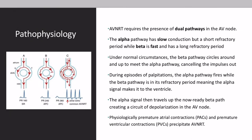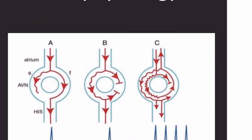A little bit of pathophysiology around AVNRT: this requires the presence of dual pathways in the AV node — the alpha pathway and the beta pathway. The alpha pathway has slow conduction but a short refractory period, while the beta pathway has fast conduction and a long refractory period. Under normal circumstances, the beta pathway circles around and meets up with the alpha pathway. It also conducts down to the ventricles, but when it meets up with the alpha pathway, it cancels the impulse out.